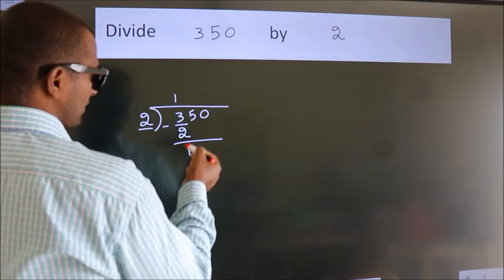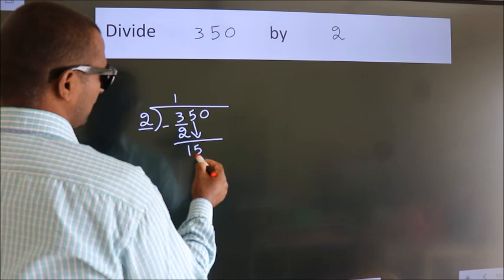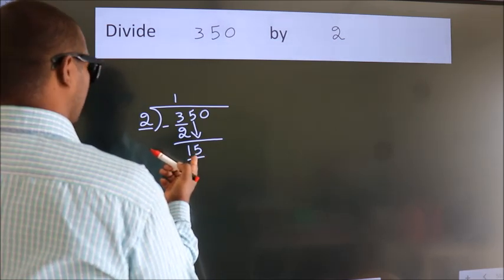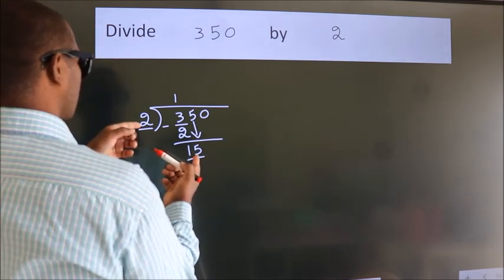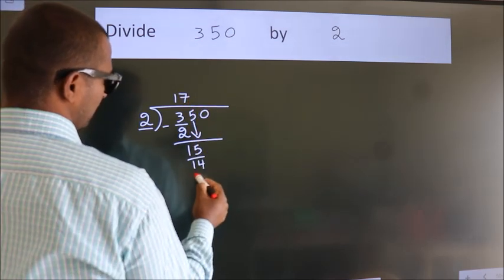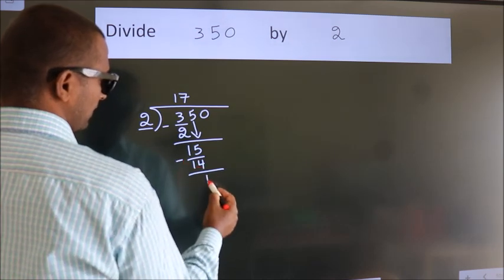After this, bring down the beside number. So 5 down. So 15. A number close to 15 in 2 table is 2 7s, 14. Now we subtract.